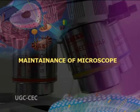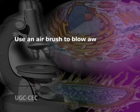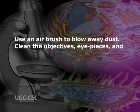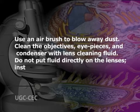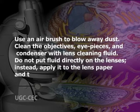Maintenance of the microscope: every month, use an airbrush to blow away dust. Clean the objectives, eyepieces, and condenser with lens cleaning fluid. Do not put fluid directly on the lenses; instead, apply it to the lens paper and then clean. Remove the slide holder from the mechanical stage and clean with tissue moistened with water. Wipe the dust off the body of the microscope and the window of the illuminator in the base of the unit. Every 6 months, thoroughly inspect, clean, and lubricate the microscope after consulting the manufacturer's manual. This should preferably be done by professional service personnel.